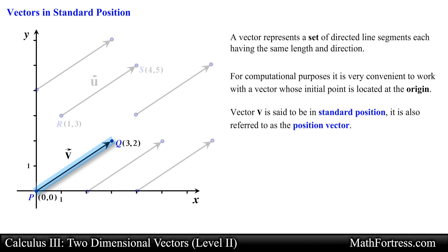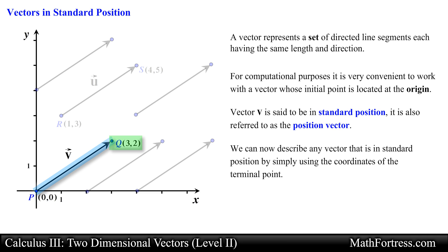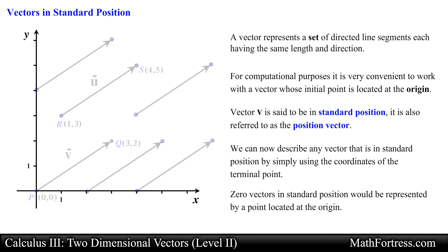The standard position of a vector is essentially a directed line segment that starts at the origin and ends at a specific coordinate point of the Cartesian coordinate system. With this representation, we can describe any vector in standard position by simply using the coordinates of the vector's terminal point. As a final note, zero vectors in standard position are represented by a point located at the origin, since both their initial and terminal points lie at the same location — in this case, both points lie at the origin.